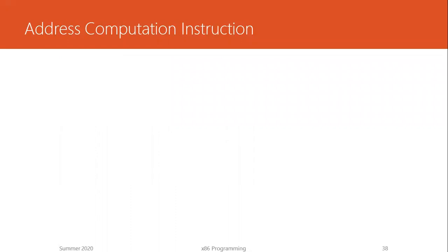Here is an instruction used in the x86 architecture for address computation. The instruction is called LEA, which takes a source operand that is an address mode expression — any of the expressions we saw in the video on addressing modes. What this instruction does is evaluate the address mode expression and put the result address into the destination operand.